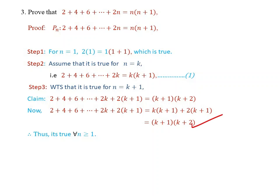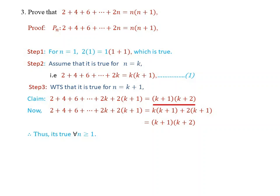Therefore 2 plus 4 plus ... plus 2k plus 2(k+1) equals (k+1)(k+2), which can be written as (k+1) times ((k+1)+1). This is true for n greater than or equal to 1. This concludes the examples on the Principle of Mathematical Induction.